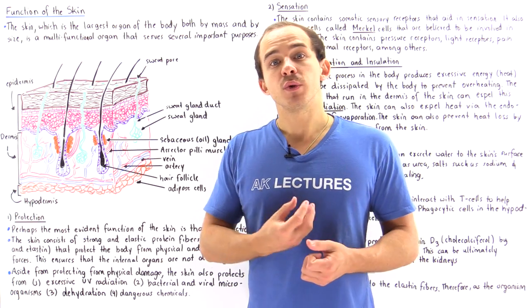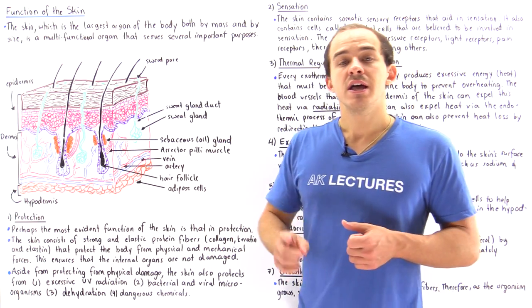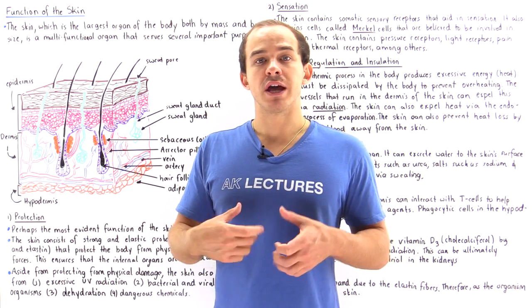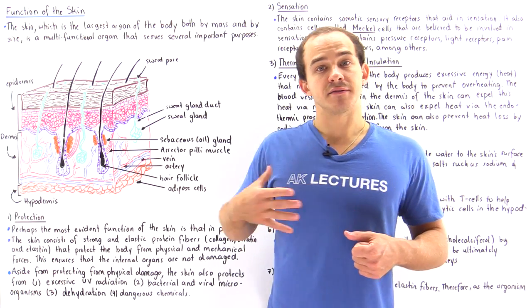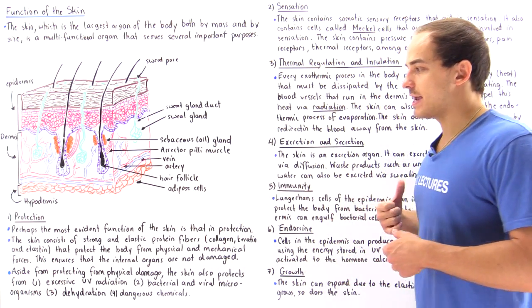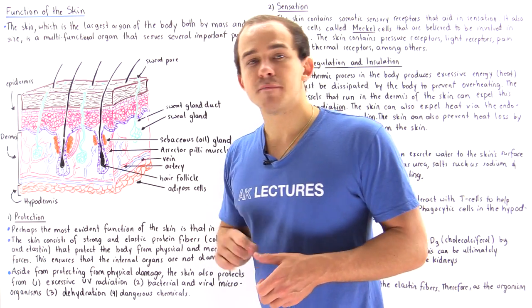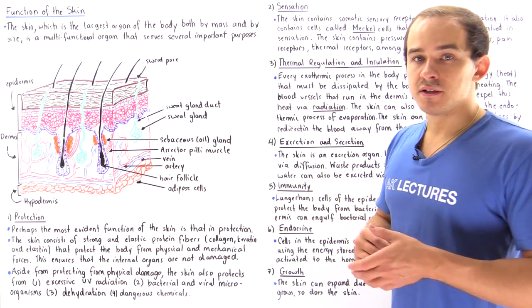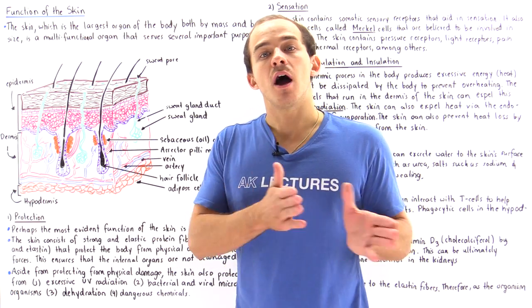For example, if we examine one particularly important internal organ — the heart — the heart is not only protected by the sternum bone and the ribcage, but also by the layer of skin that exists on top of the sternum and ribcage. Aside from protecting internal organs from physical damage, our skin also protects us from many other things.